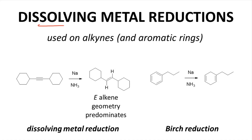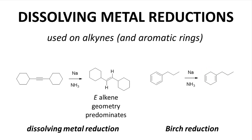This slide shows a pair of reductions called dissolving metal reductions. These conditions involve sodium metal literally dissolved in liquid ammonia, and are most commonly associated with the reduction of alkynes to alkenes or the reduction of aromatic rings. Alkynes reduced under these conditions give mostly the E-alkene configuration. The aromatic ring reduction, called a Birch reduction, gives a cyclic 1,4-diene. These reactions involve pumping electrons into a pi bond in the starting material to form a carbanion, which gets protonated by the ammonia. This process repeats again to give the addition of two hydrogens to the molecule.